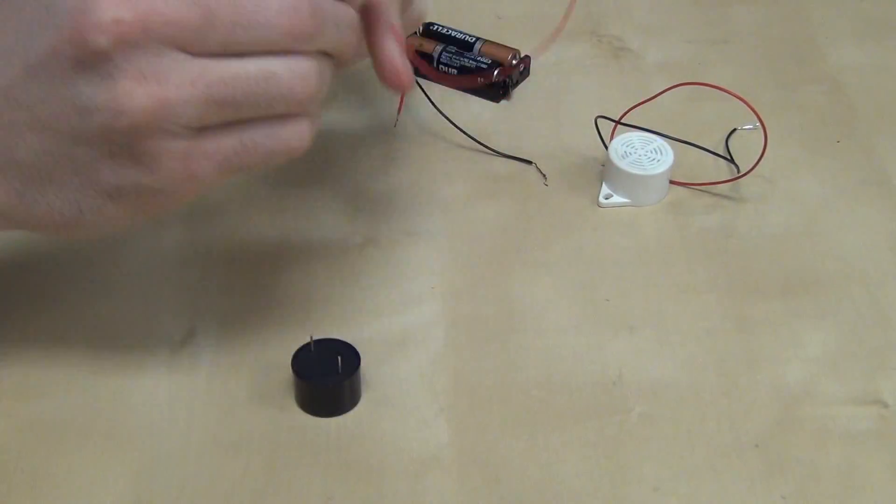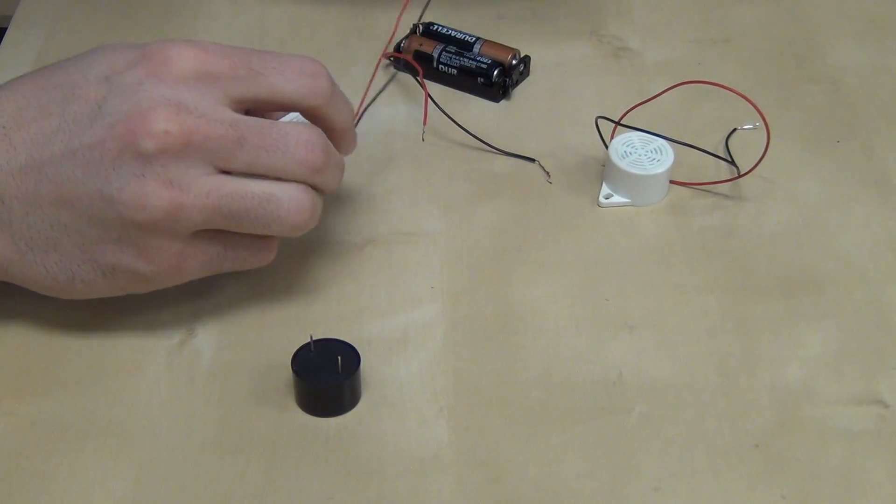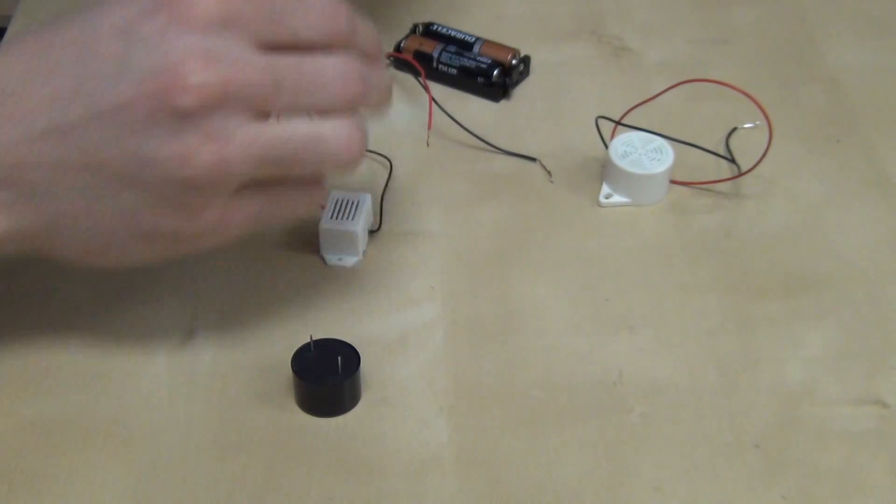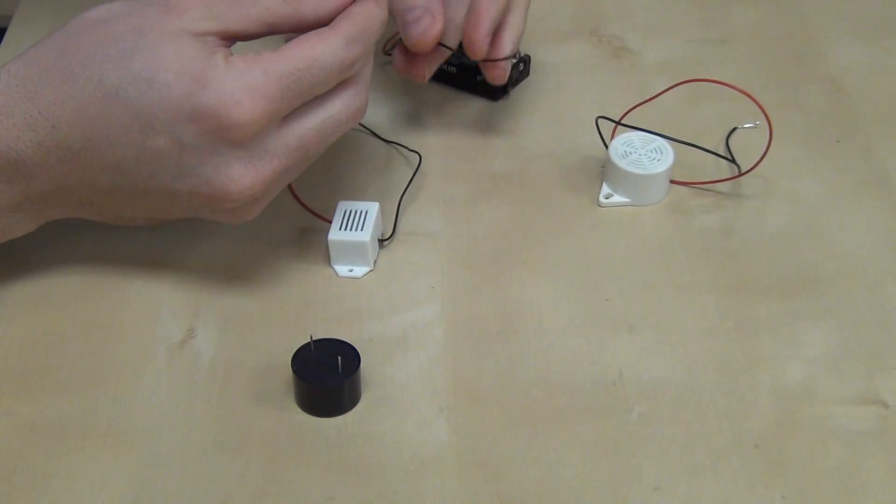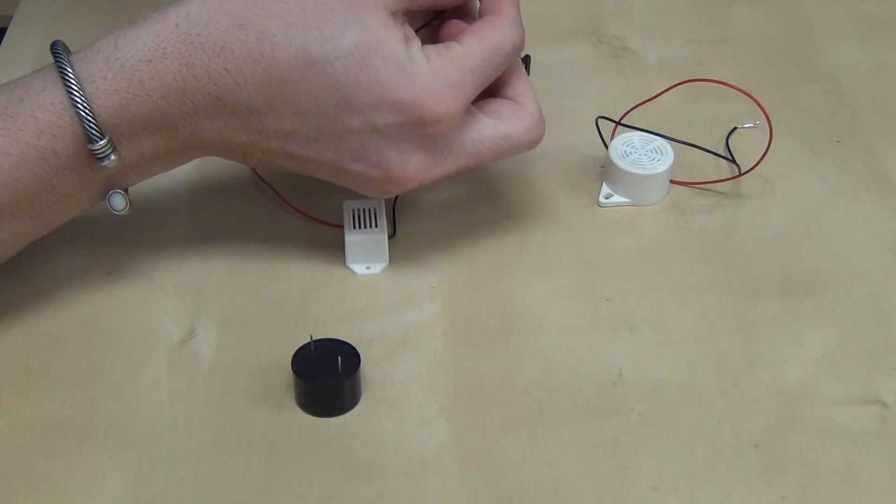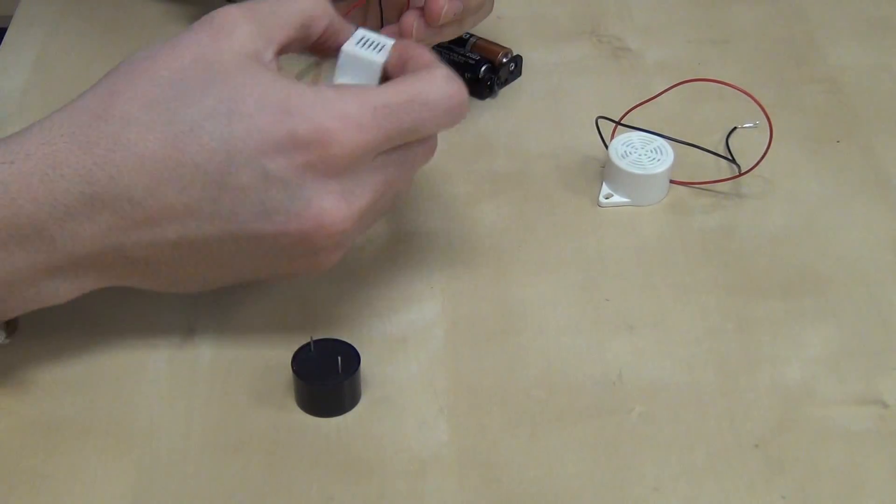And finally we have the rectangular buzzer here, one and a half volt to three volts. And this is also available in black, we have both white and black. Let's see how this one sounds. Let's remove it from the table.